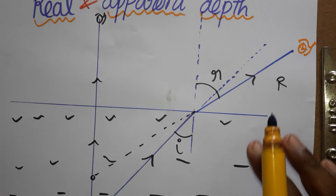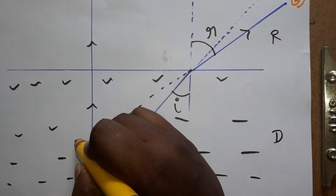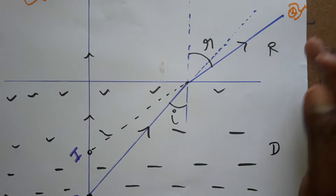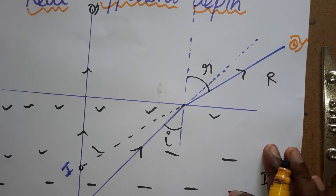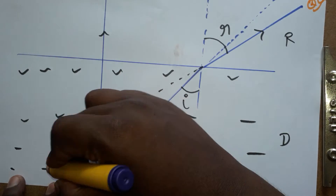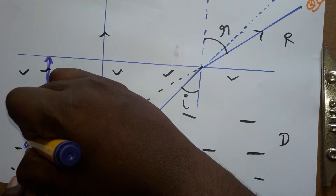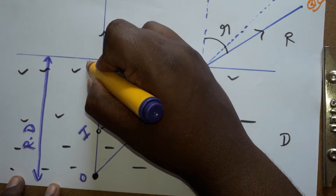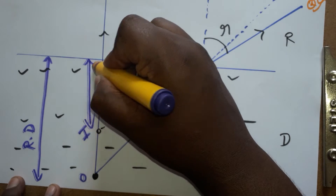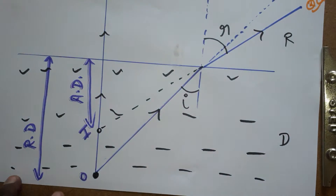Suppose you place the object here; the image will be formed at a different position when you are looking from outside the water. The distance from the object to the surface is called the real depth, and from the surface to the apparent image position is called the apparent depth.